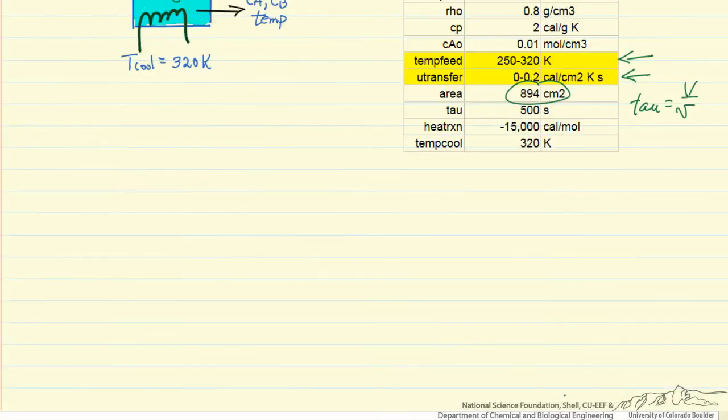The first thing we're going to do is write down the mass balance for reactant A at steady state. We have a volumetric flow rate in with a concentration CA0, so this is the molar flow rate in, this is the molar flow rate out, and the difference is due to the reaction in the forward direction and then the reaction in the reverse direction.